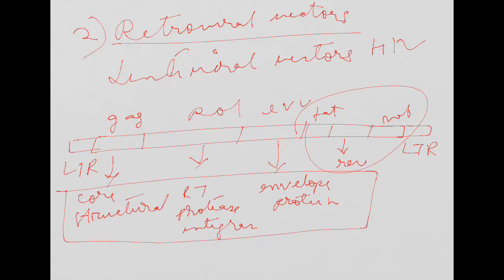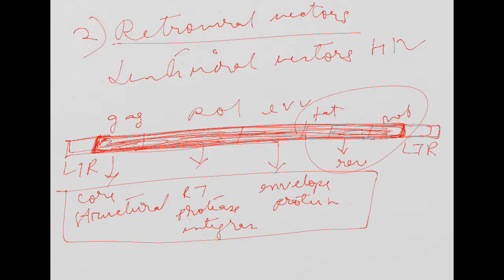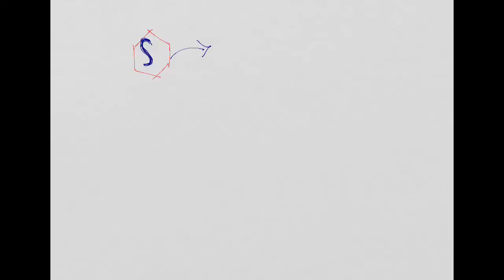When using retroviral vectors to transfer our gene of interest, we don't need the GAG, POL, ENV, REV, or TAT genes — these are dangerous genes that would pose a threat to the target cell. So we remove all these genes from the genome of the retroviral vector and insert our gene of interest in their place. We then allow the viral particle containing only this modified genome to infect our target cell.